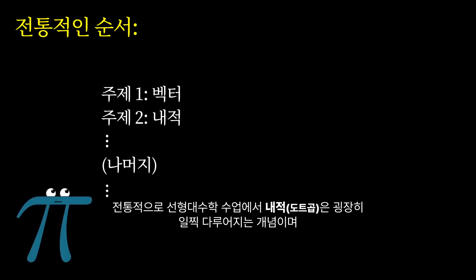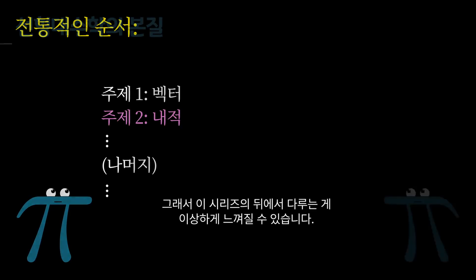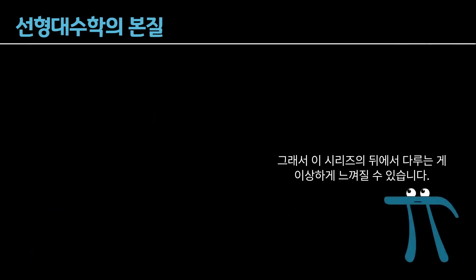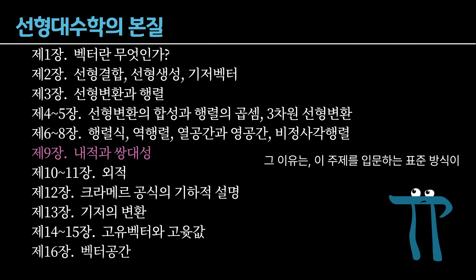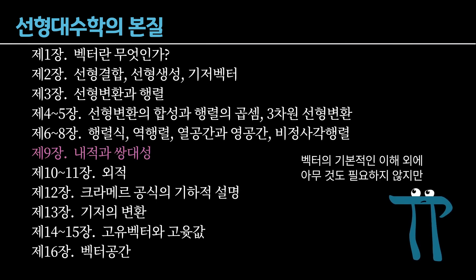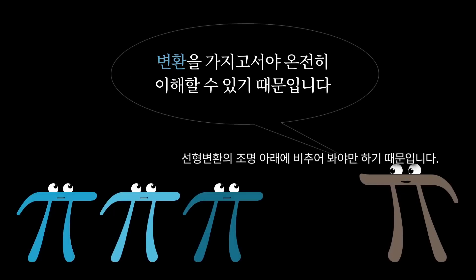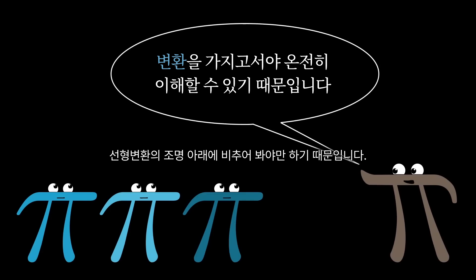Traditionally, dot products are something that's introduced really early on in a linear algebra course, typically right at the start, so it might seem strange that I've pushed them back this far in the series. I did this because there's a standard way to introduce the topic, which requires nothing more than a basic understanding of vectors, but a fuller understanding of the role that dot products play in math can only really be found under the light of linear transformations.